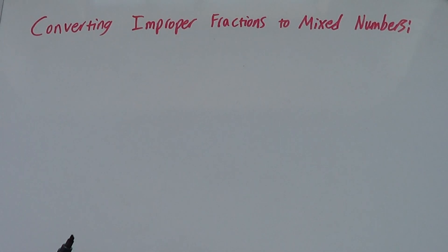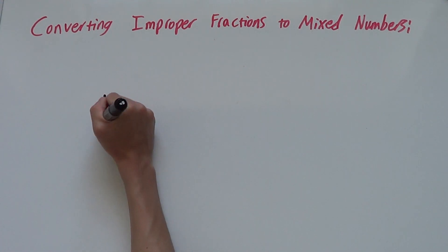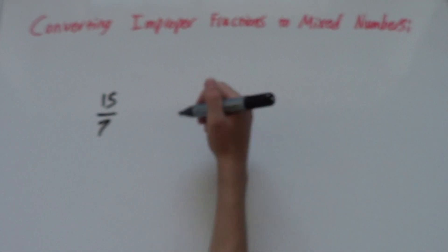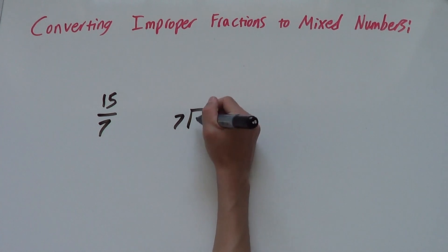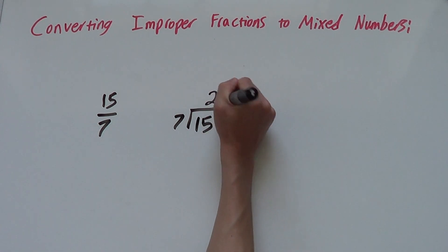So let's say we have 15 over 7. So we make this a division problem. 7 goes into 15 2 times with a remainder of 1.